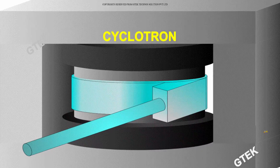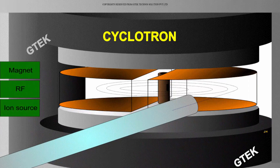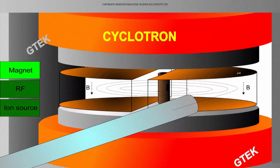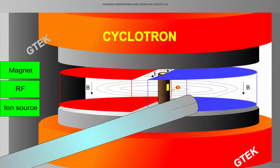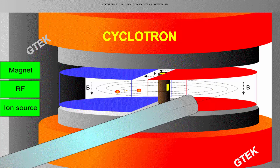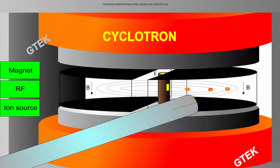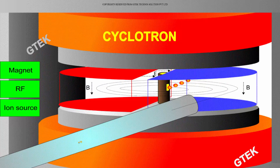Let's talk about an interesting area related to Lorentz force — that's cyclotron. You are able to see the magnets at the top, the RF, and the ion source which is the generator. Cyclotron is a device for generating a charged particle, accelerating it, and taking it out. A charged particle can be accelerated using this specialized device, that's cyclotron.